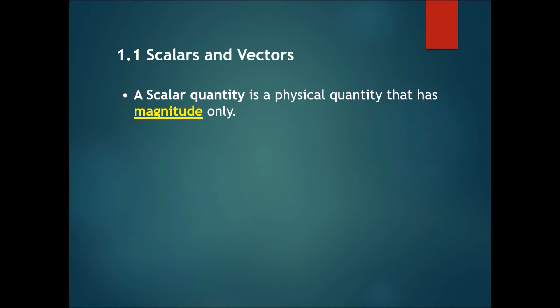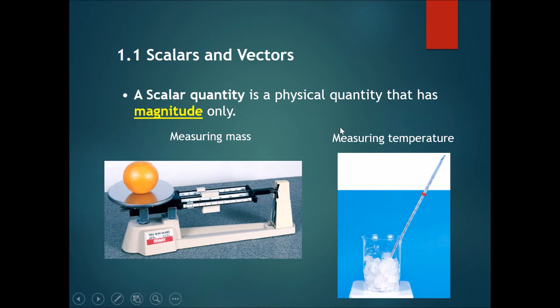First, a scalar quantity is a physical quantity that has magnitude only. These things have only numbers in them, but they do not have any directions. Examples include 1 kg or 0 degrees Celsius.